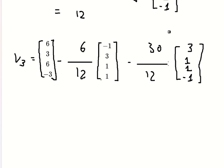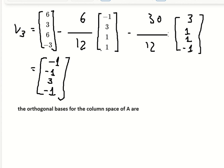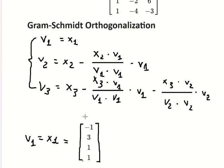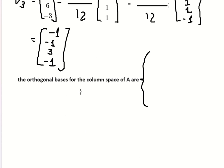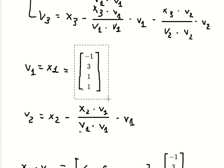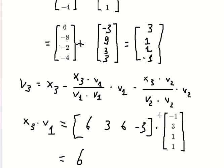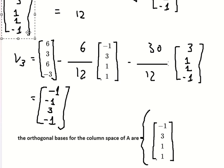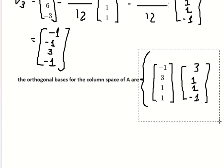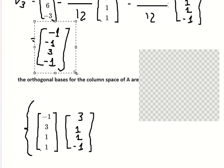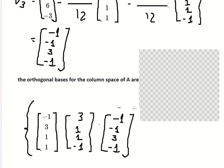We simplify and write the final answer. So to conclude, v1 is this vector, v2 is this vector, and v3 is this vector. Those are the three orthogonal basis vectors found using the Gram-Schmidt process.